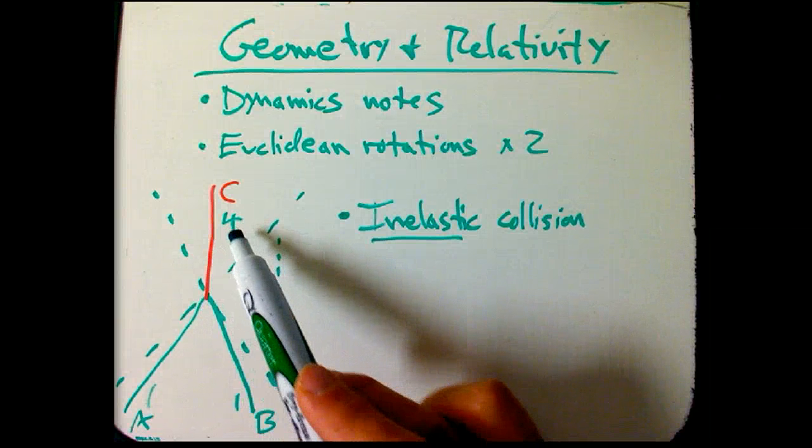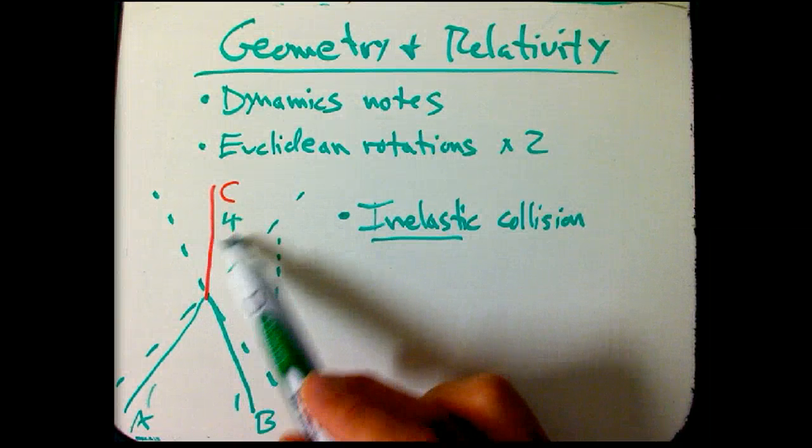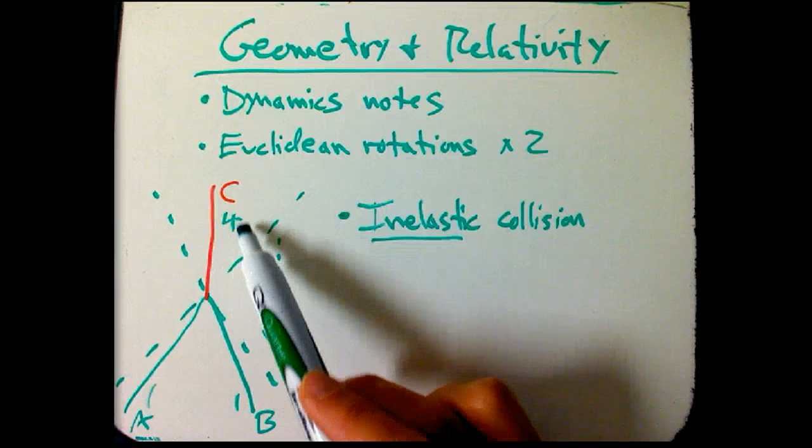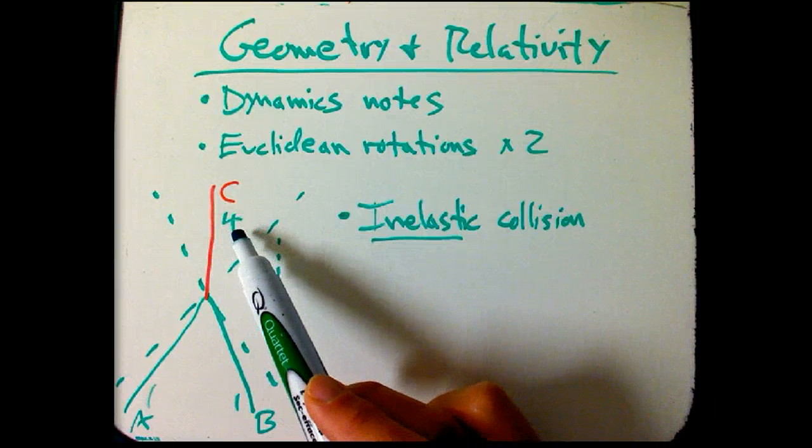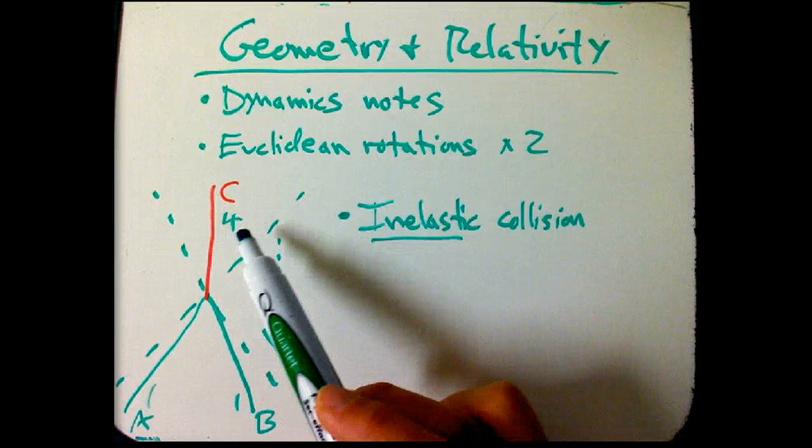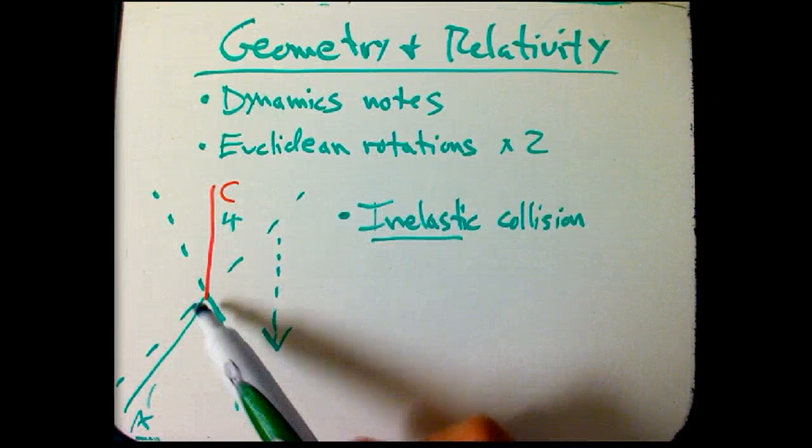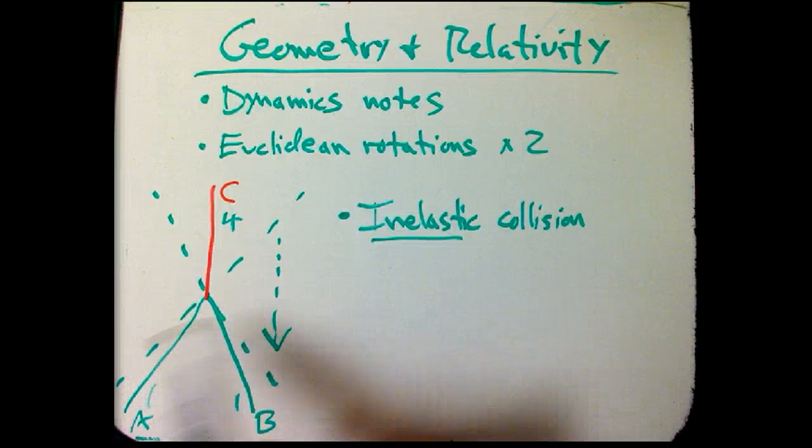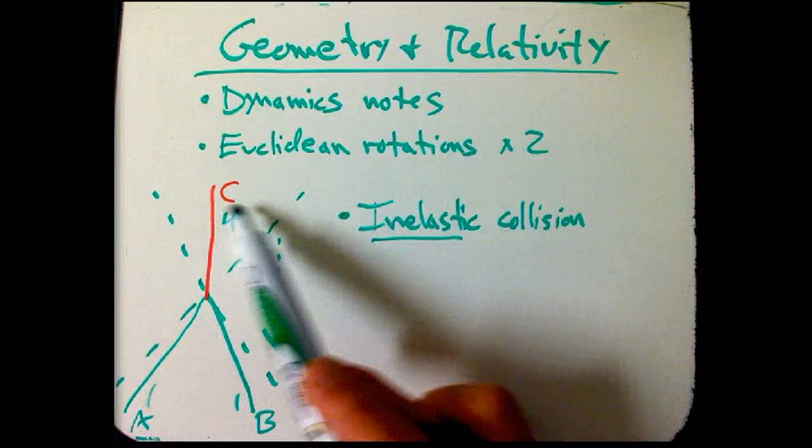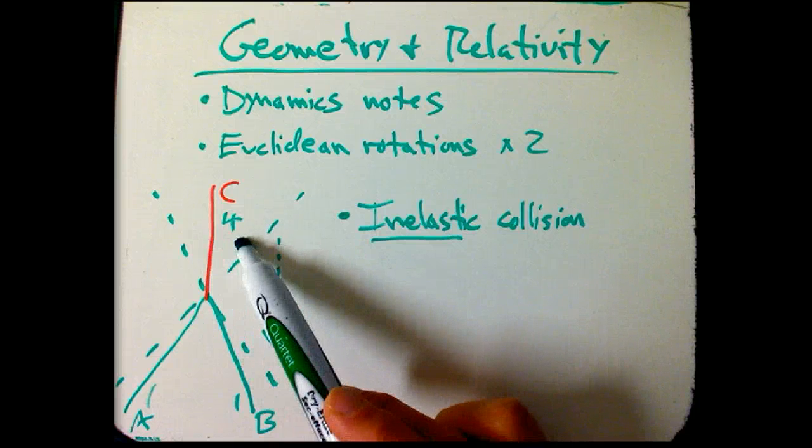But maybe this is, if you just change the units, maybe this is four, you know, trillions of trillions of a gram or something. And this object breaks apart into two objects with a tremendous amount of kinetic energy. And that kinetic energy seems to come out of nowhere, but it really comes out of the mass energy of this object.